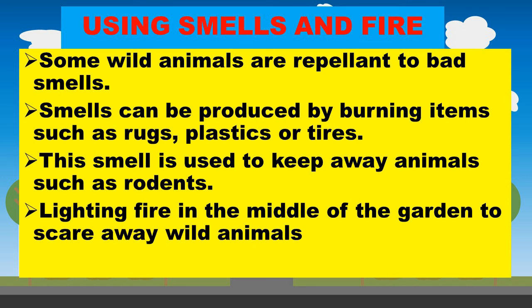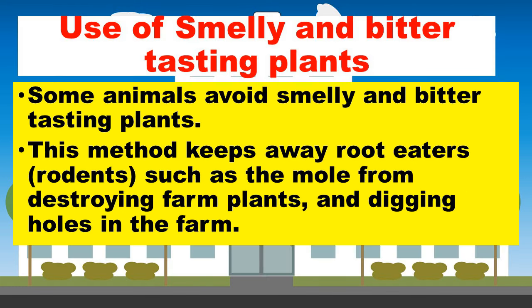Rodents are the ones that eat roots. Lighting fire in the middle of the garden can scare away the wild animals. We can also use smelly and bitter tasting plants. Some animals avoid bitter tasting plants. This method keeps away root eaters, meaning rodents such as moles, from destroying farm plants and digging holes in the farm.